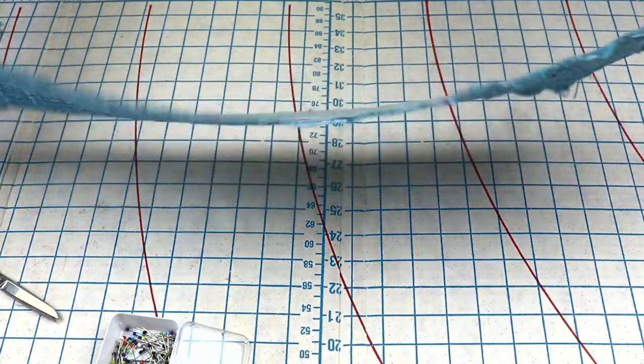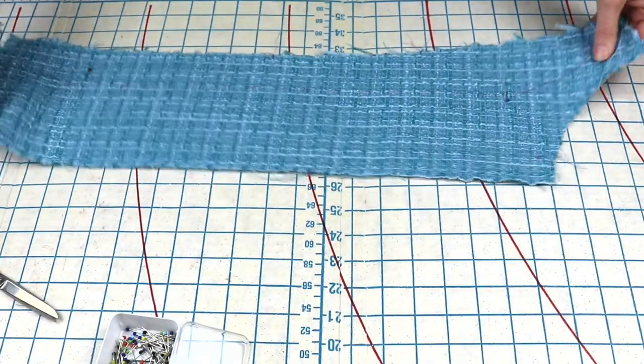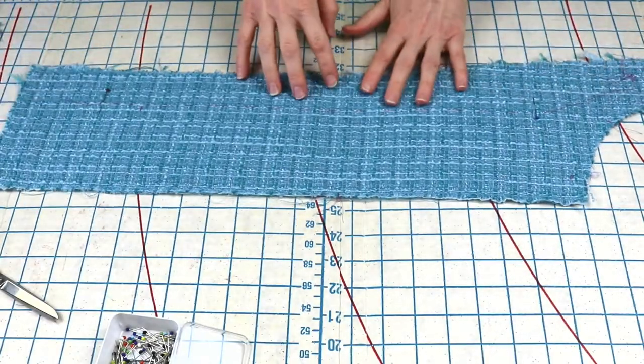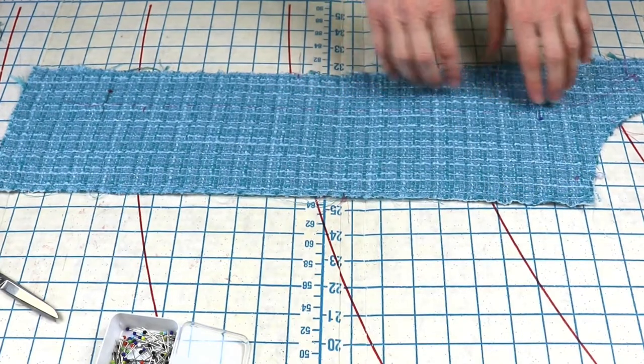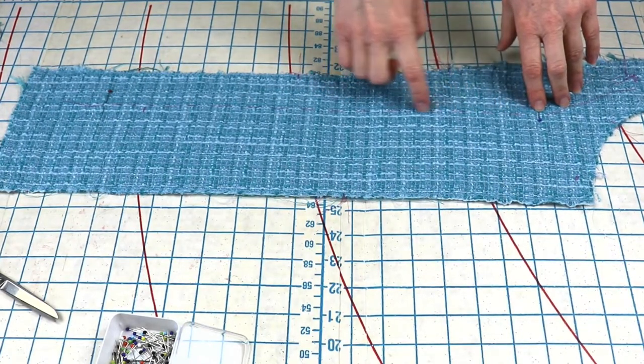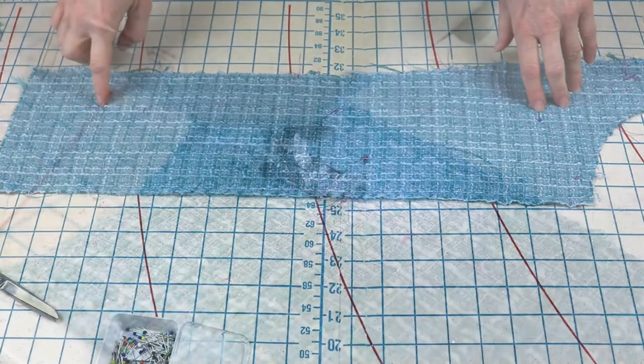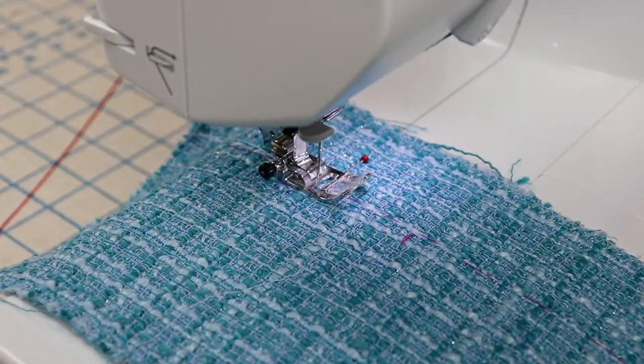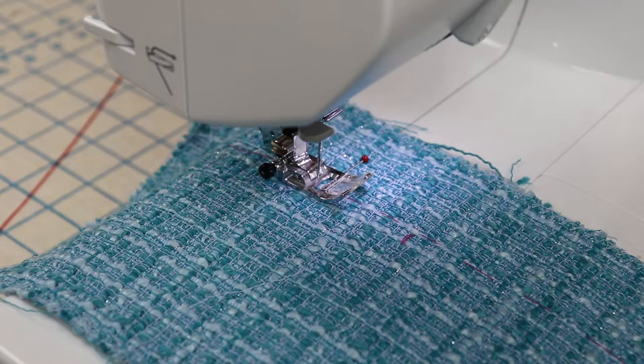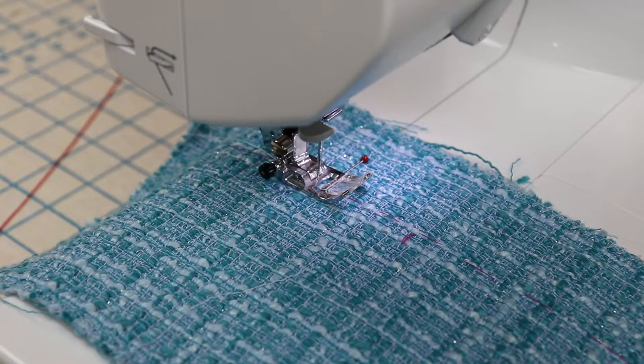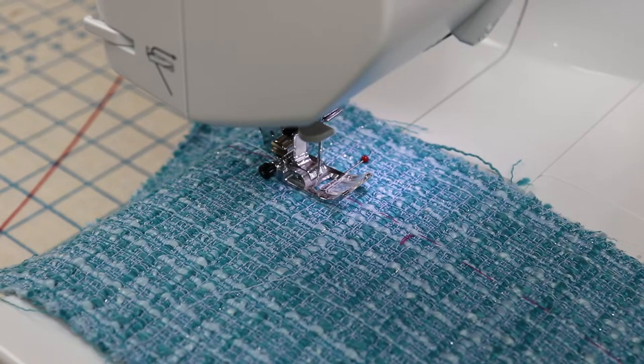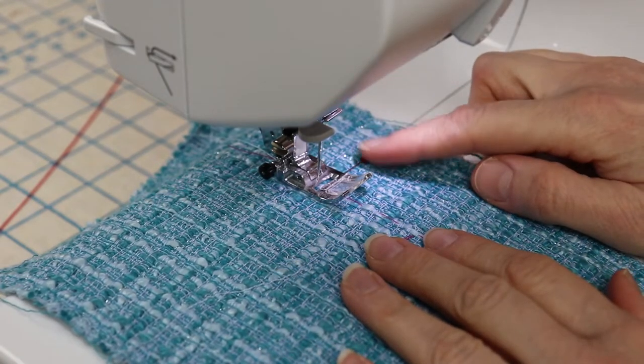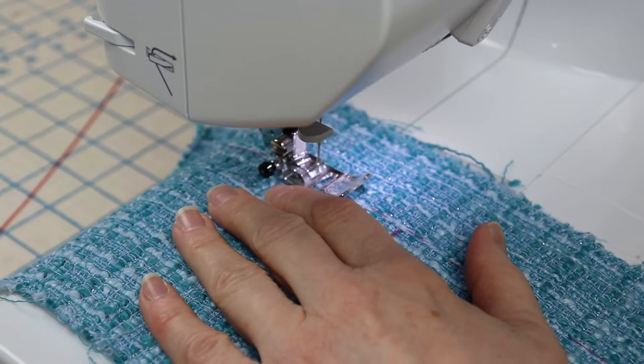Okay, so now we are ready to take it to the sewing machine. And you will sew a row of stitches next to the line that you marked. So set your stitch to four millimeters, about four to five millimeters, the stitch length. And just go slowly.